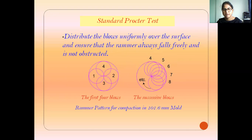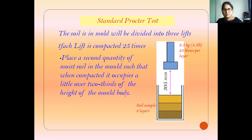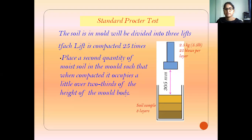Distribute the blows uniformly over the surface and ensure that the rammer always falls free and is not obstructed. The rammer must compact the soil properly all around the area using successive blows. The soil in the mold is divided into three layers. The second quantity placed in the mold must be such that when compacted, it occupies a little over two-thirds of the height of the mold. Use 2.5 kg hammer with 25 blows per layer.